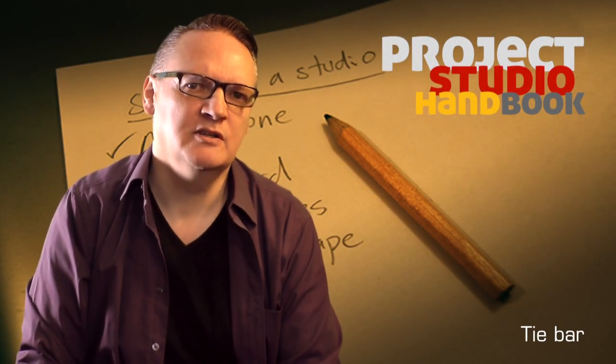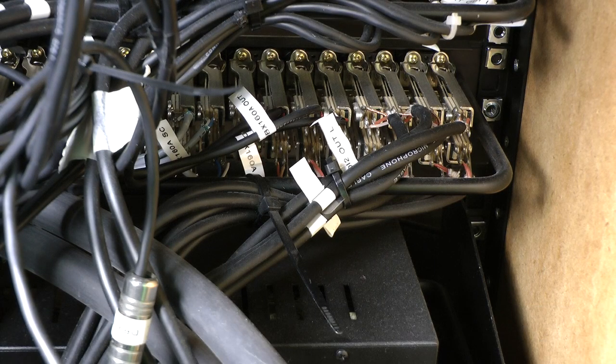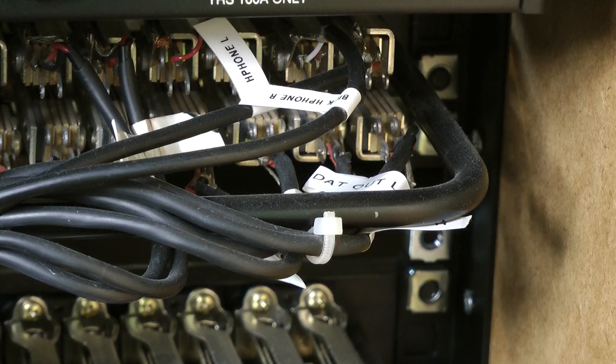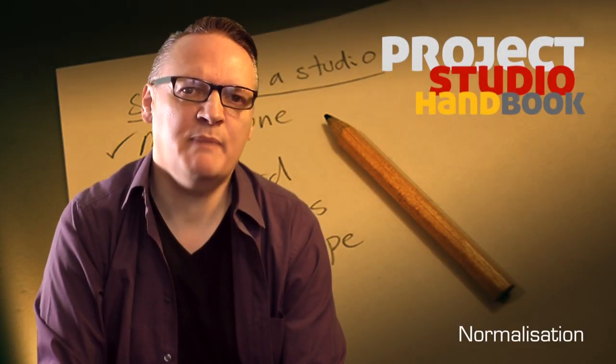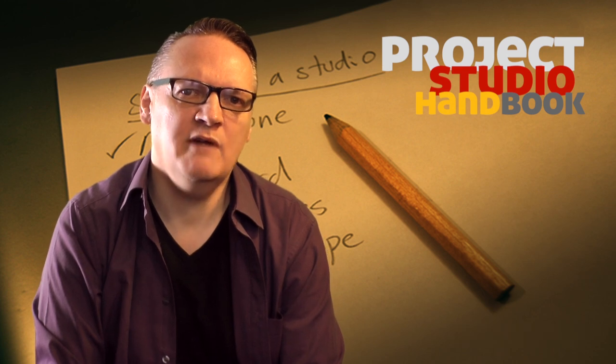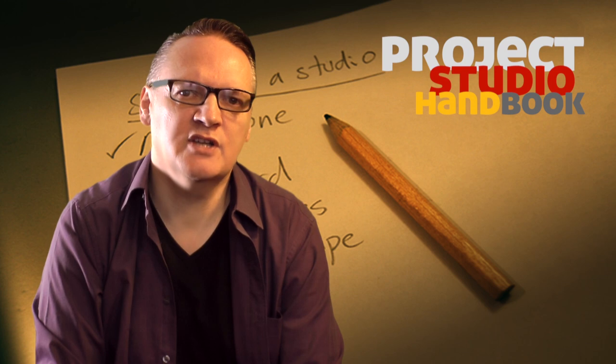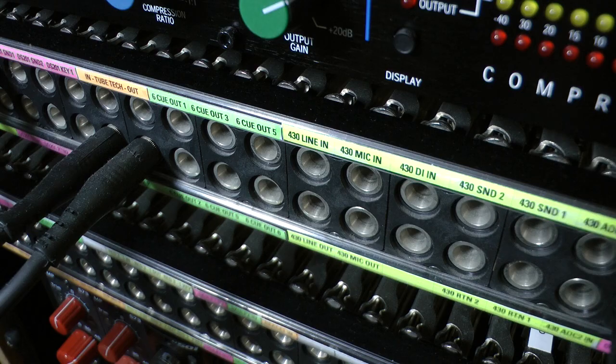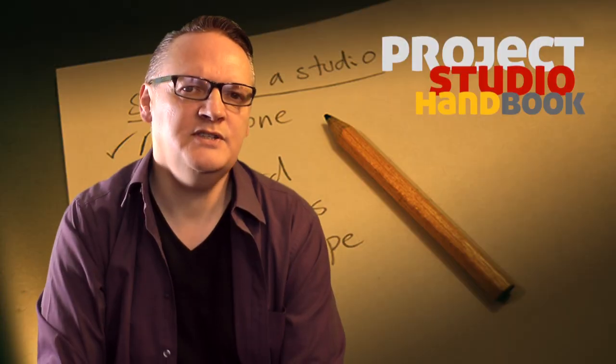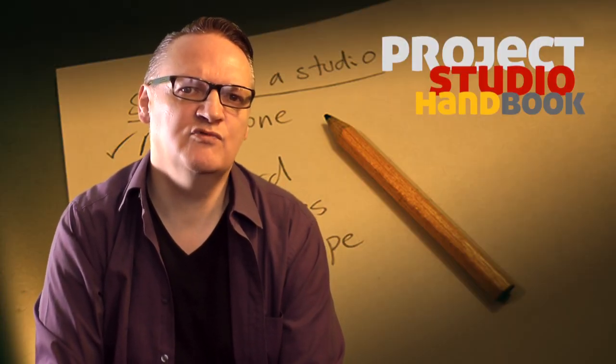The rear of the patch bay should feature a tie bar to connect looms to and prevent strain on the connections. To minimize the need to use patch leads for every connection, normalization is a wiring configuration whereby vertically adjacent sockets are permanently connected together even when no lead is plugged in. This allows you to have default connections which can be changed when required.